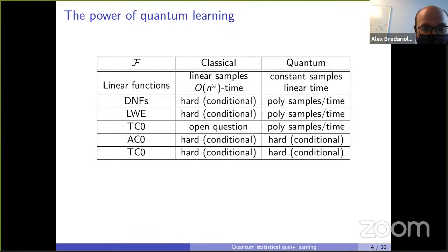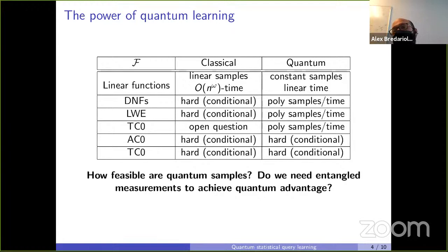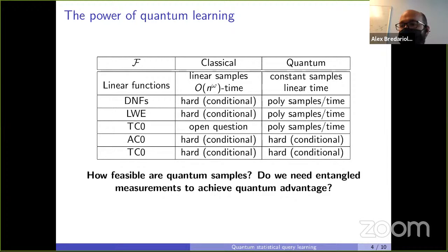Given the power of quantum samples, our goal is to understand: are they too powerful? How feasible are they to create? And where does their power come from — does it come from having many samples with entangled measurements, or from something else? To study these questions, we define a new model called the quantum statistical query model.